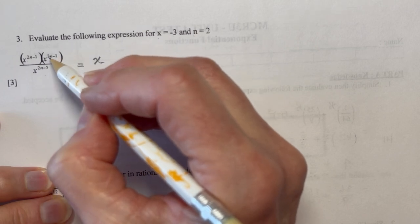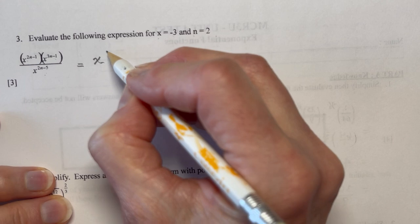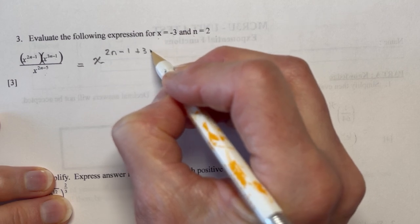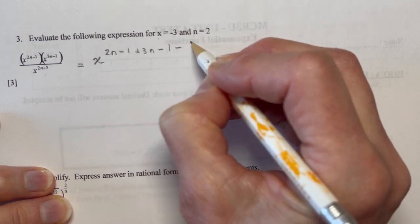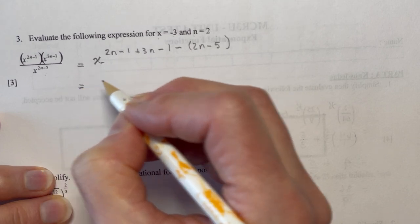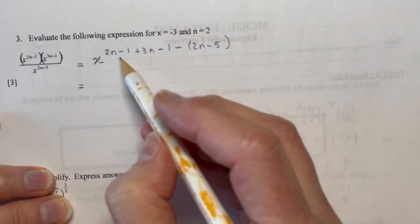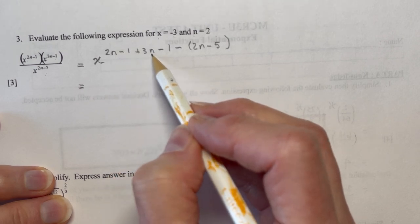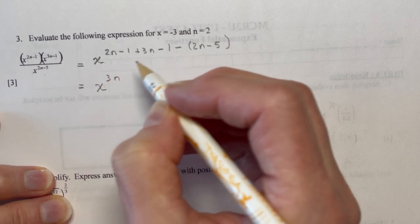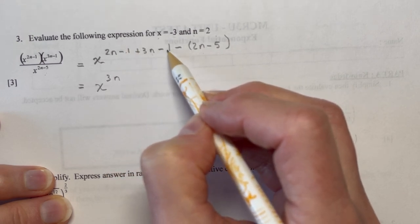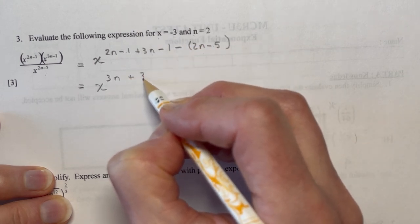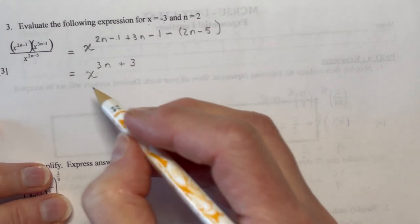So I want you to just show me that you know that if I'm multiplying, I would add the exponents. And if I'm dividing, I would subtract the exponents. So that means I'm going to have x to the 2n minus 1, so I'm multiplying. I'm going to add 3n minus 1, and I'm going to subtract 2n minus 5. And by doing that, I can simplify this very easily and then plug in minus 3n2 in the end. So I have 2n plus 3n minus 2n, which is just 3n. So I have x to the 3n. And for my constants here, I have minus 1 minus 1, that's minus 2 plus 5 is 3. So I have x to the 3n plus 3. And now it's much easier to plug in my values.